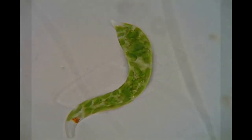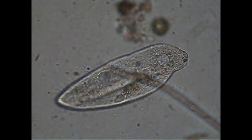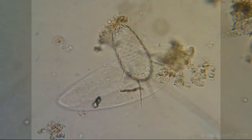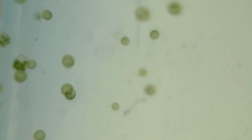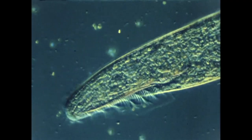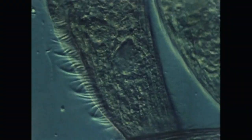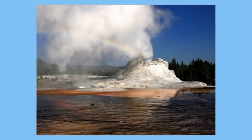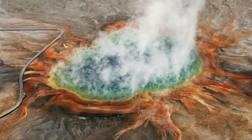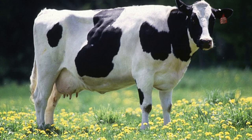Let's take a look at some examples. Some unicellular organisms live in extreme environments, like hot springs or in the stomach of a cow.